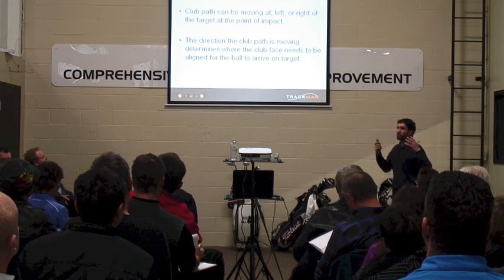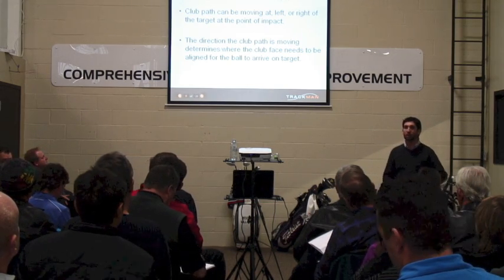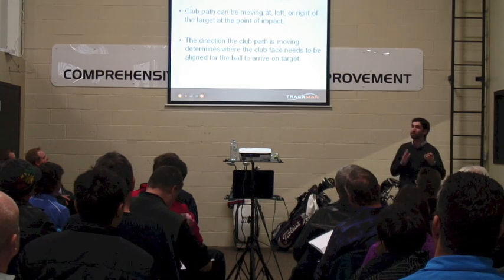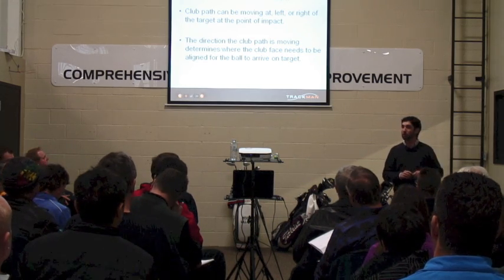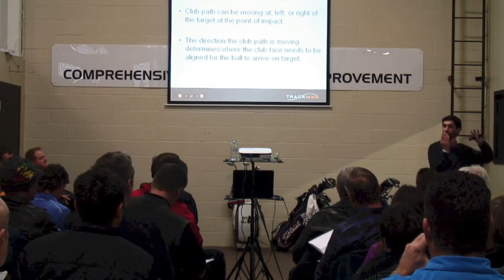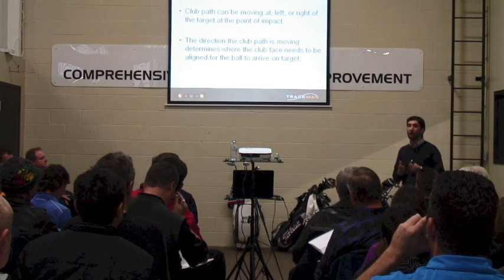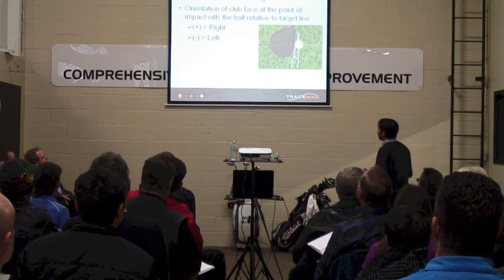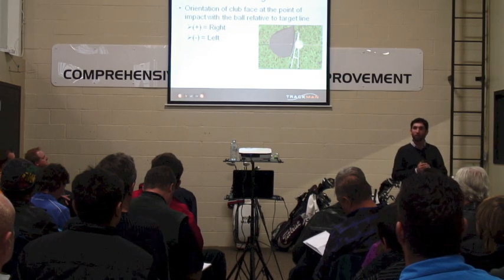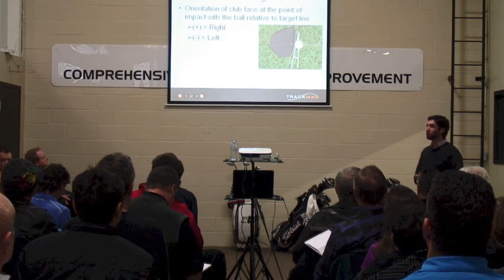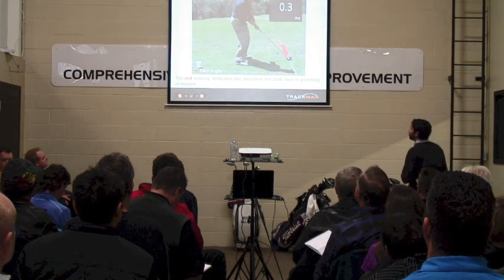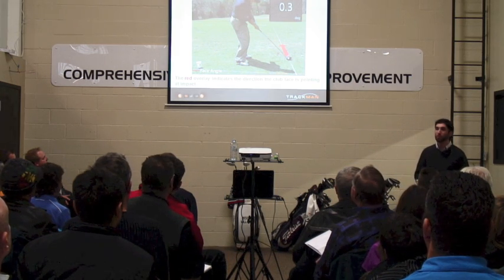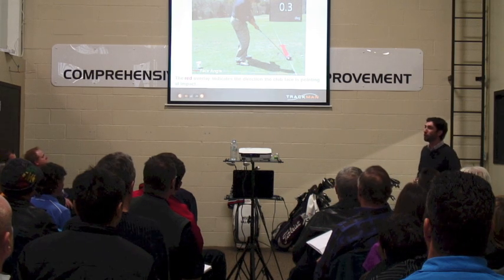For example, if your path is constantly traveling to the left of the target, for your ball to arrive at your intended target, you'd need the club face to be slightly open. Club face is the orientation of the face when it collides with the golf ball in relation to the target — and again, plus and minus applies the same way. This is Jeff Overton, and you can see his club face at impact is literally pointing right down that target line. When you start talking about club path and club face, you look at the relationship between the two — they're correlated. There's a variable called face-to-path: the orientation of the club face relative to the path.